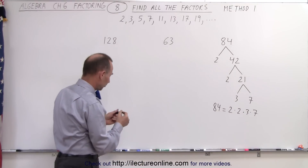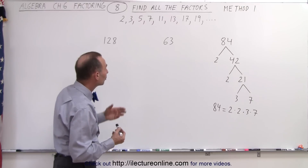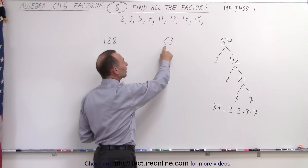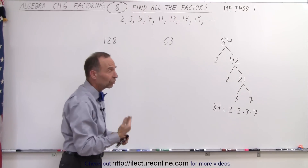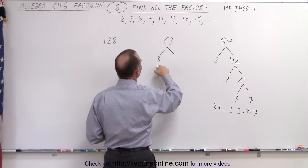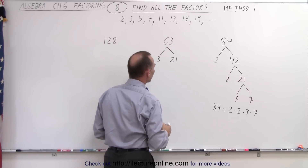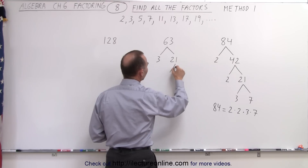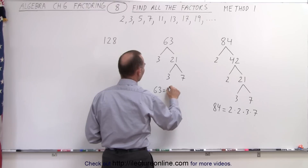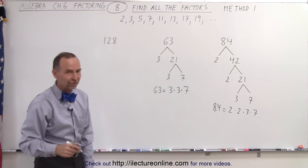We can do the same for 63. Notice 63 is not divisible by 2 because it's already odd, so we try the next number on the list, which is 3. Notice when I add the digits together, 6 plus 3 is 9, and 9 is divisible by 3, so therefore 63 is. That means we can divide 63 by 3, and that leaves us with 21. 3 times 21 is 63. Notice that 21 is still divisible by 3, so we have 3 and 7, which means that 63 is equal to 3 times 3 times 7. So these are the three factors of the number 63.